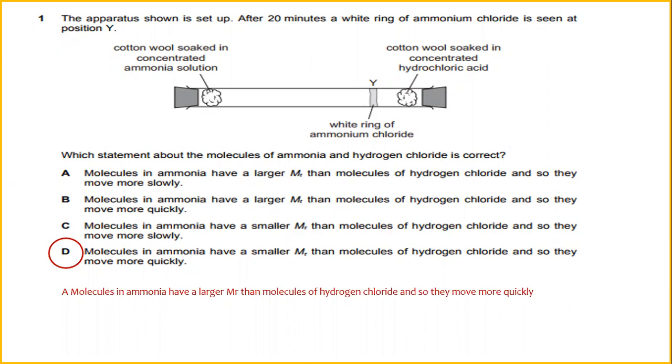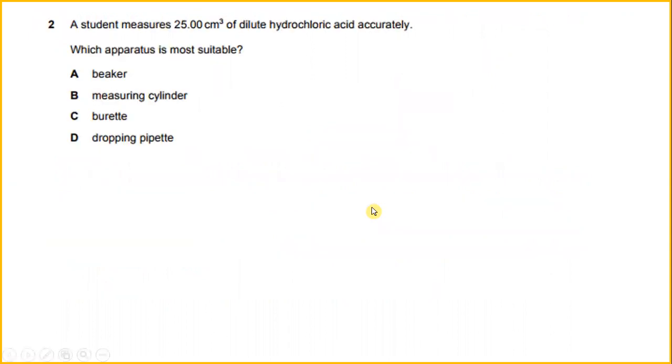A student measures 25 cm³ of dilute hydrochloric acid accurately. Which apparatus is more suitable? Buret. Buret measures the volume of dilute hydrochloric acid.